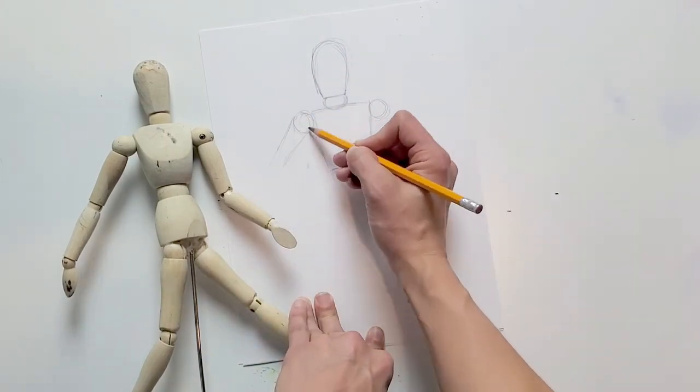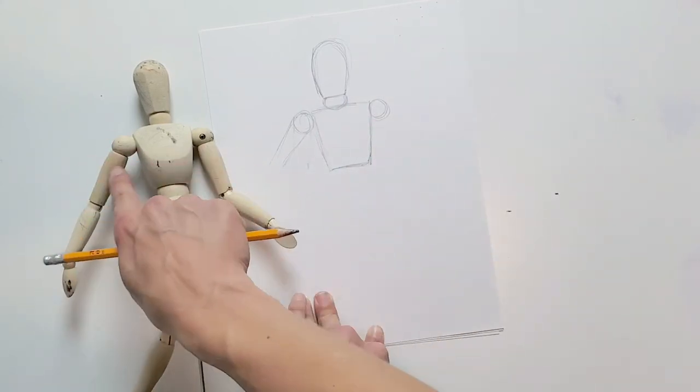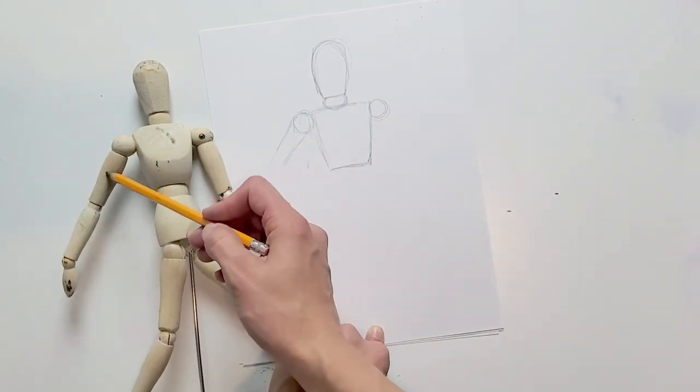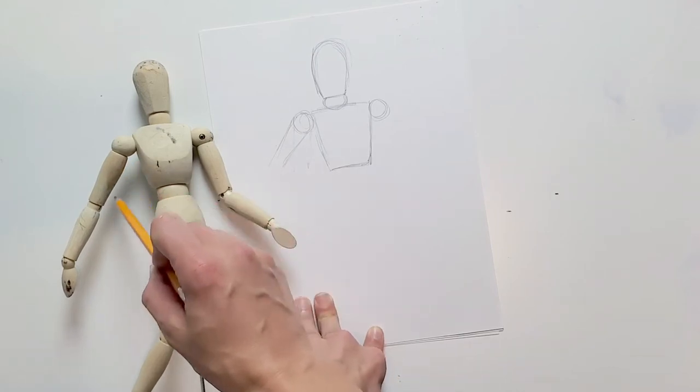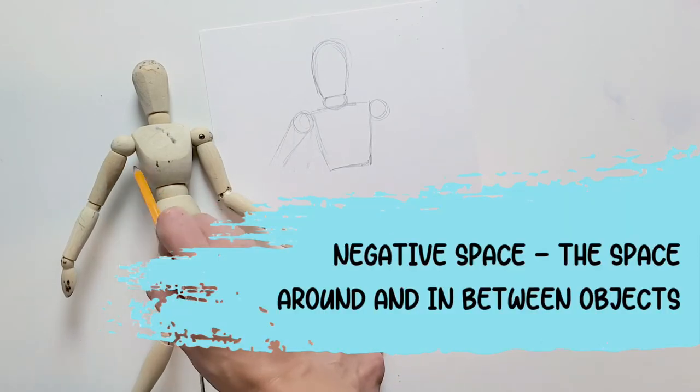So when I am drawing, I'm not only looking for positive shapes, so positive shape would be the circle, the rectangle of the arm, but I'm also looking for negative shapes. So if I'm looking in here, I'm going to start to see a triangle, right? The shape that is created by the positive shapes.